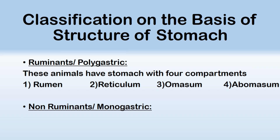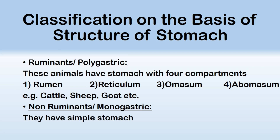Ruminants are the animals which have a stomach with four compartments: rumen, reticulum, omasum, and abomasum. Examples of these animals are cattle, buffalo, sheep, goat, camel, etc. Similarly, non-ruminant or monogastric animals have only a simple stomach and do not have a compartmental stomach.